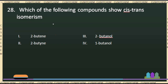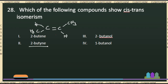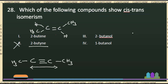Which of the following compounds shows cis-trans isomerism? We examine 2-butyne — it has a carbon-carbon triple bond, sp hybridization, and is a linear molecule, so it cannot show cis-trans isomerism. 2-butanol is the correct answer showing the required structural feature.